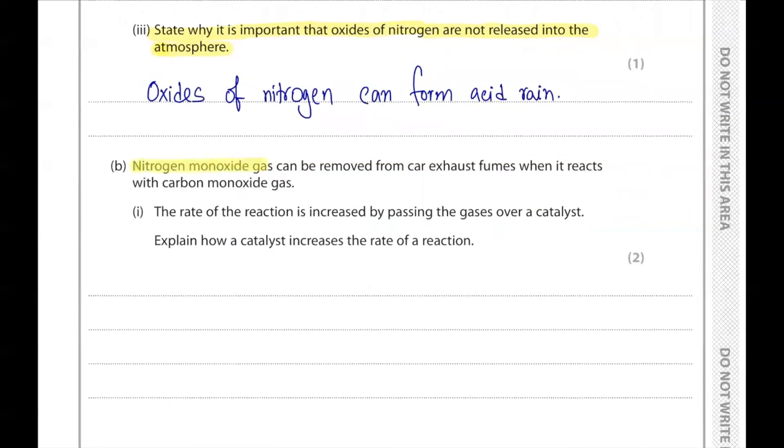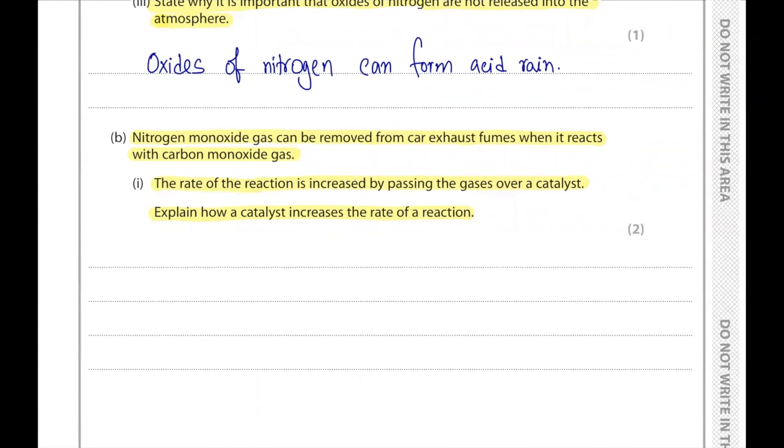Part B. Nitrogen monoxide gas can be removed from car exhaust fumes when it reacts with carbon monoxide gas. The rate of the reaction is increased by passing the gas over a catalyst. Explain why a catalyst increases the rate of reaction. A catalyst can provide an alternative reaction route or reaction pathway, which can lower the activation energy.